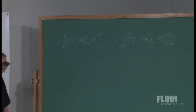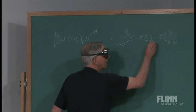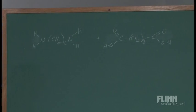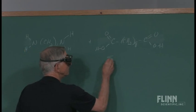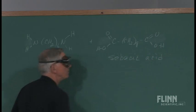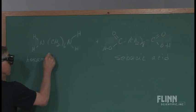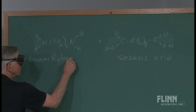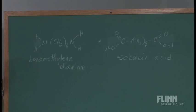In this particular example, I'm going to use a 10-carbon dicarboxylic acid. The CH₂ is called a methylene group. So this is hexamethylene — six methylene hydrogen groups — diamine.